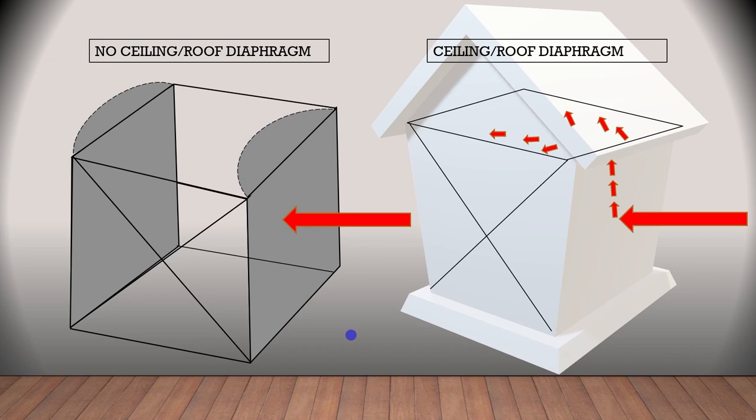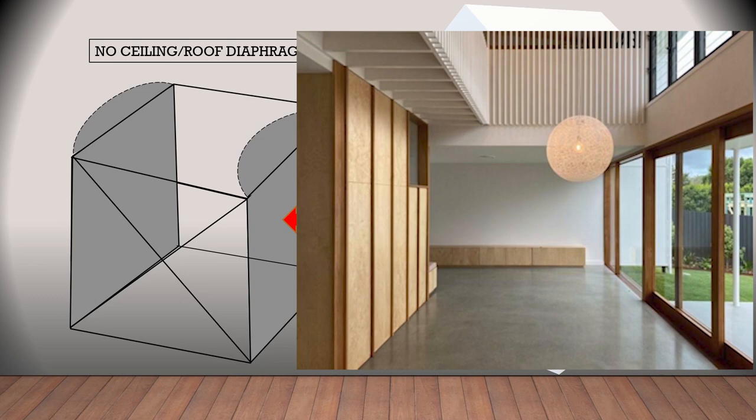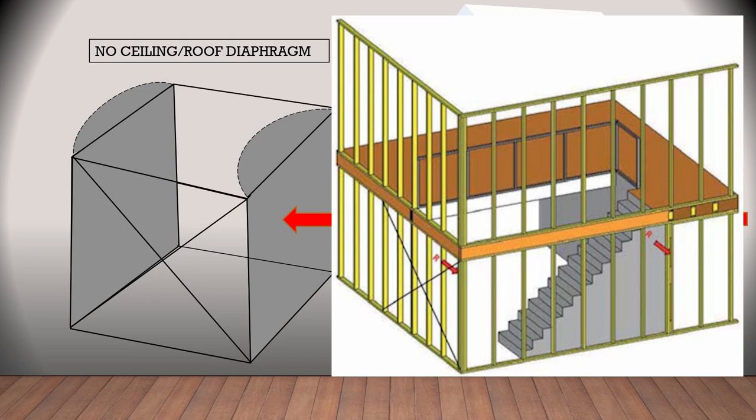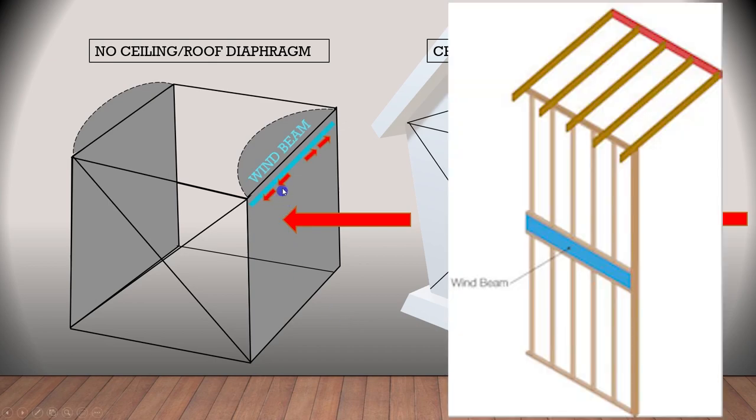You will come across a situation like that in two-story buildings where a full-height void region exists between the first floor and ground floor. These void regions commonly fall within stairwells and entrance lobbies. In this case, a wind beam can be used to resist the horizontal wind loads and prevent the wall from bowing out.